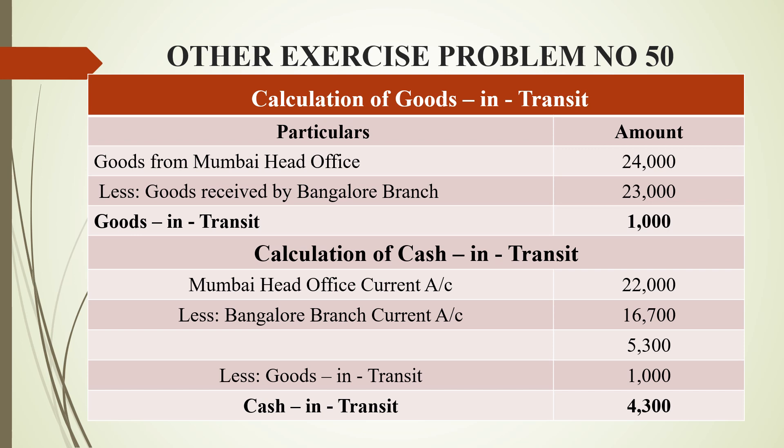You can get goods from Mumbai head office. The current account balance is 200,000. The branch received 16,700 worth of goods, so the balance of 5,300 is goods in transit. Less 1,000 rupees, the remaining balance amount is called cash in transit, that is 4,300.